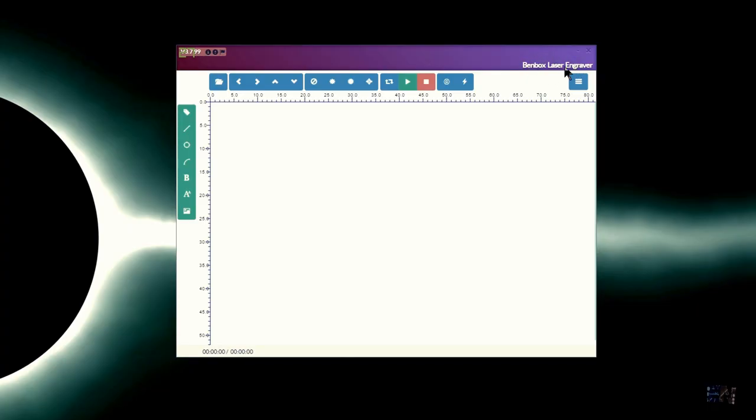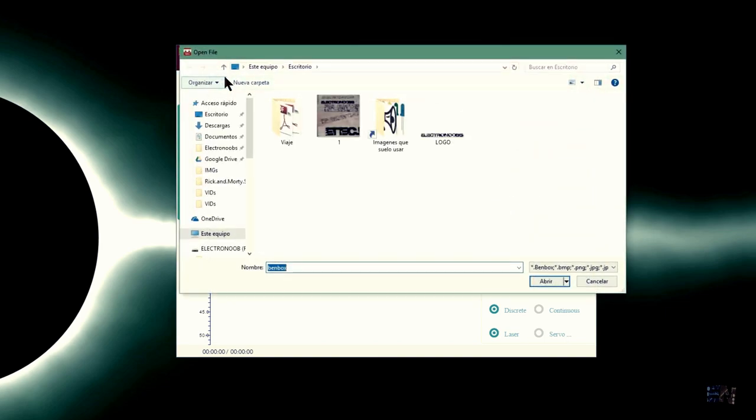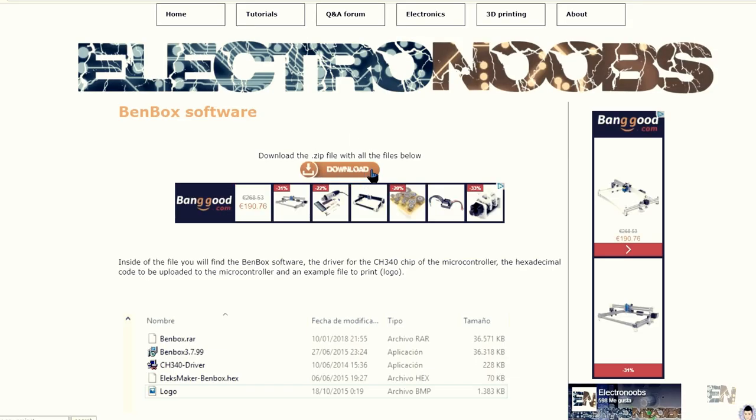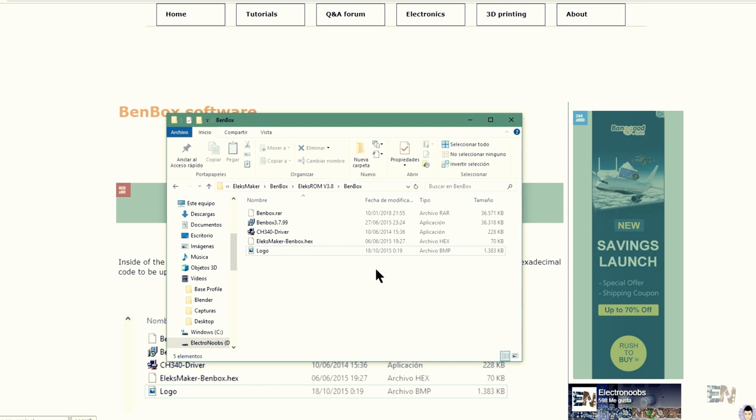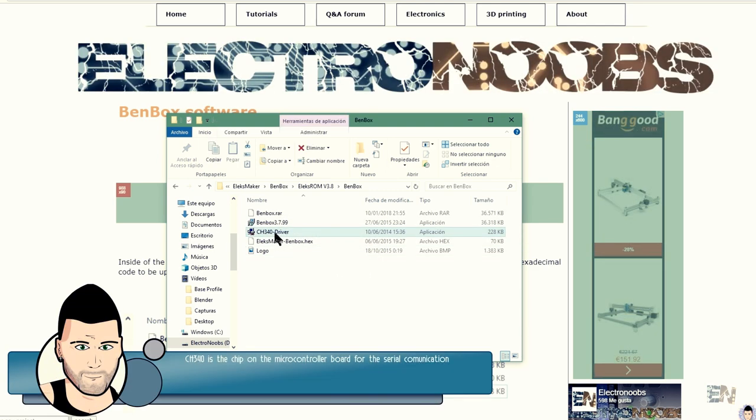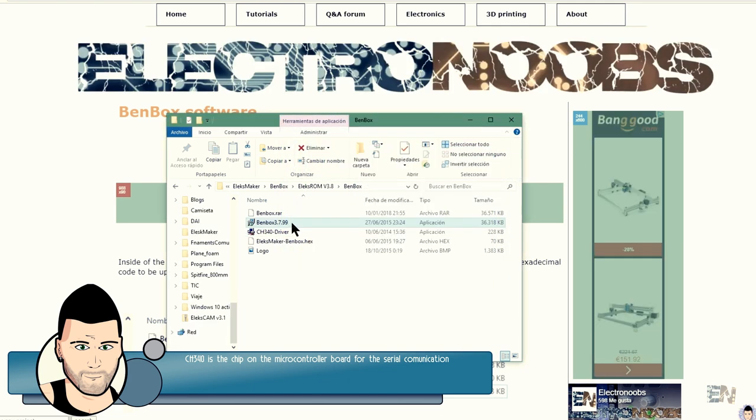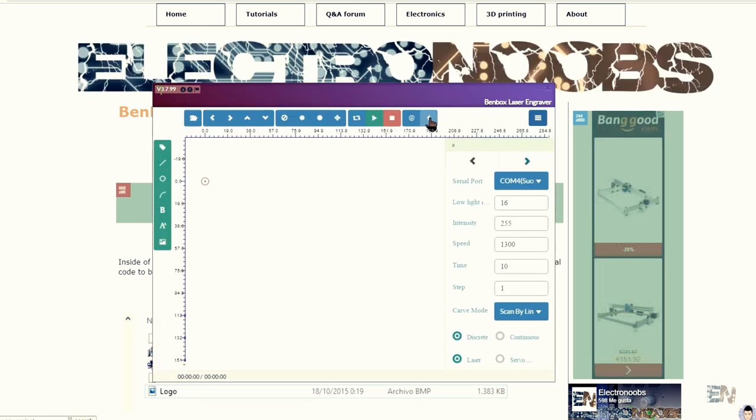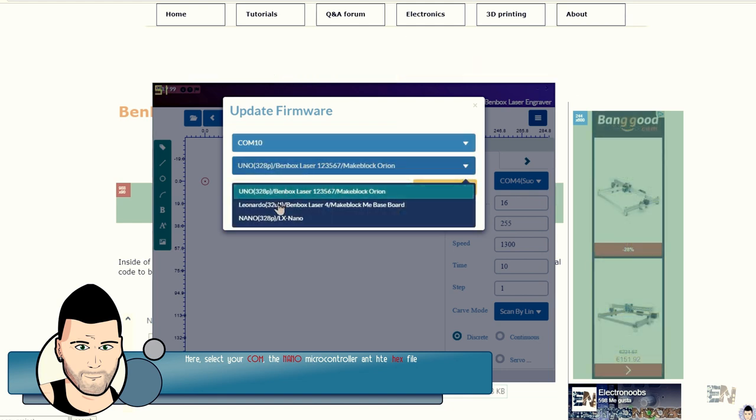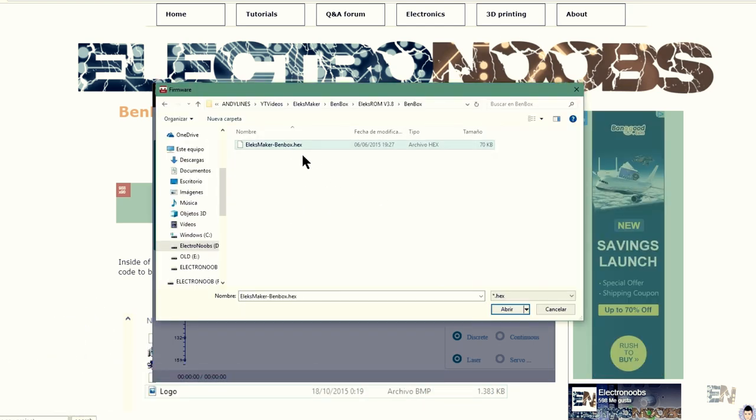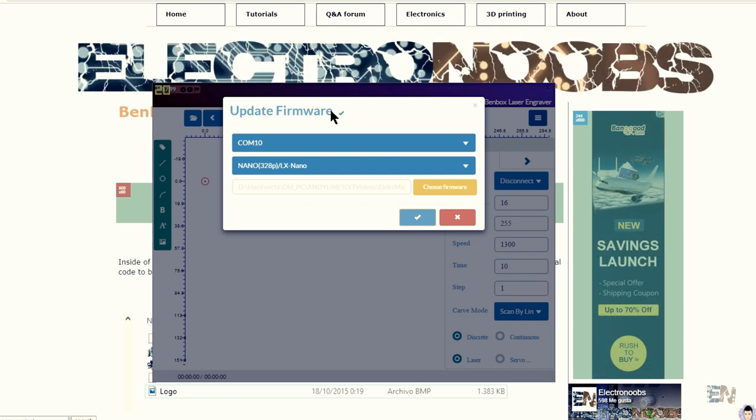So I decided to use another software called Benbox, but for that we first have to upload another code to the main board of the machine compatible with this software. Download the zip file below and extract it. Inside that folder you will have the software but also the firmware for the main board in a hexadecimal format. First you have to make sure that you install the CH340 driver software. Once that is done, install the Benbox software and open it. Here in the software you have to click the update firmware button in order to upload it to the board. Select the COM of the machine board and now open the hexadecimal file that you have downloaded in the folder. Upload the code.